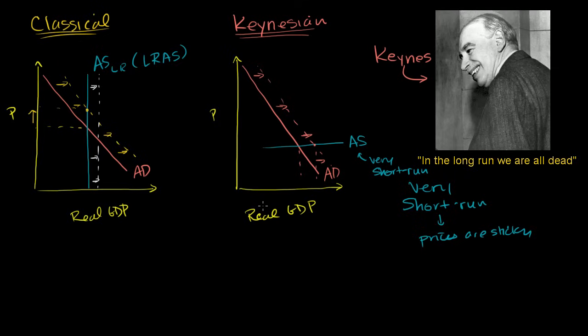And Keynes' real realization was, was that look, the classical economists would tell you, if you have a free and unfettered market, the economy will just get to its natural, very efficient state. And Keynes says, yes, that is sometimes true, but that's sometimes not true. And we'll talk about different cases.